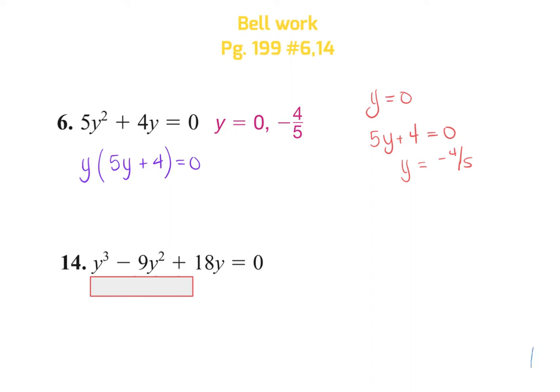If I look at the next one, I'm going to look at the numbers and the variables to see what I have in common. Here I do have a y in common, so I can take that y out first. I have the y on the outside, then I have y squared minus 9y plus 18. For this one, I'm going to look for factors of 18 that add up to give me 9. I'll see that 3 and 6 multiply to give me 18. Specifically, I need them to multiply to positive 18 and add to negative 9, so that's y minus 3 and y minus 6.